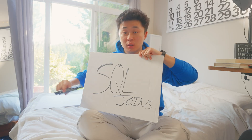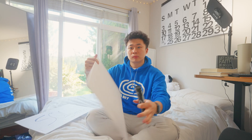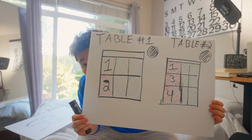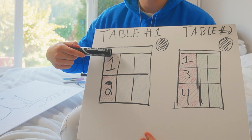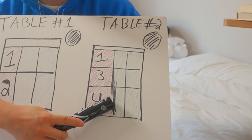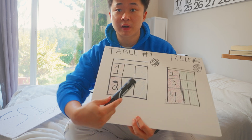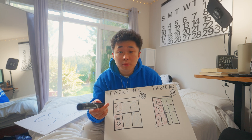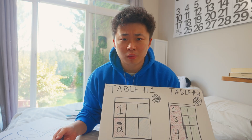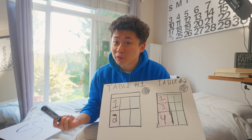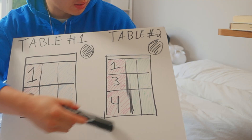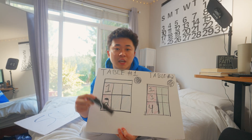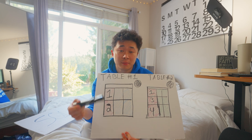Today we're going to be talking about SQL joins. We have table one and table two, both with similar values but also different values. The whole point of a SQL join is to connect two tables together. Sometimes you don't want all the data — sometimes you want only what they have in common, or just what table one has along with table two, or the opposite. So today we'll dive into the different types of SQL joins, what they mean, and how to do them.